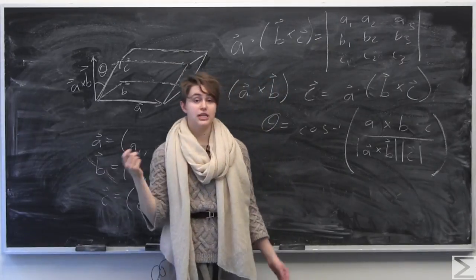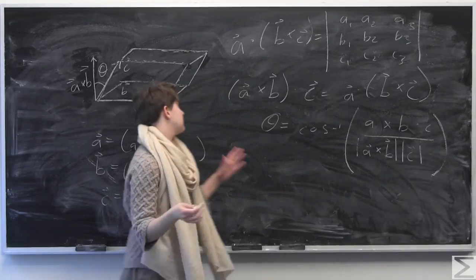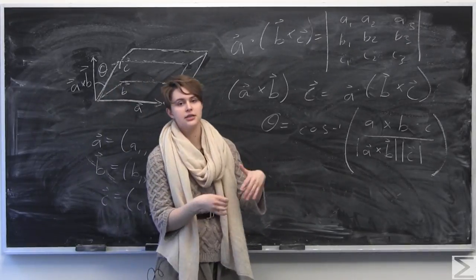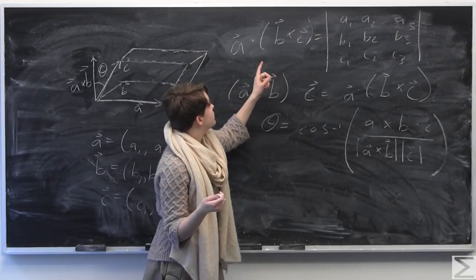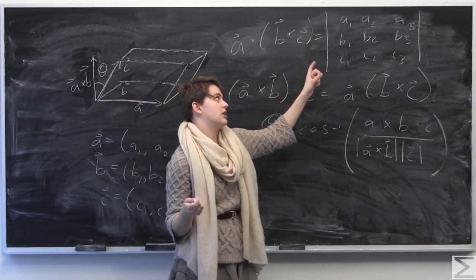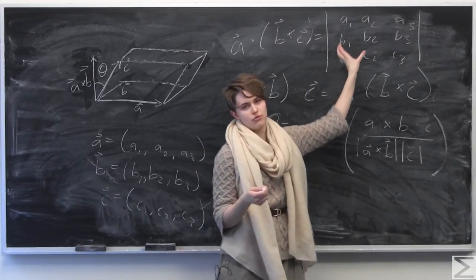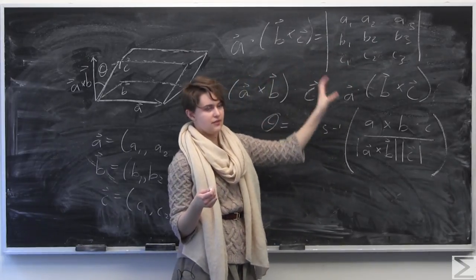So we have the parallel piped defined by these three vectors here. What we're going to do, we're going to take the triple product, also known as the box product, because it kind of looks like you're taking the volume of a box. Here, we're setting up, just like we had the cross product, where we're setting up this matrix with three vectors in it, and then we're going to take the determinant of that matrix.